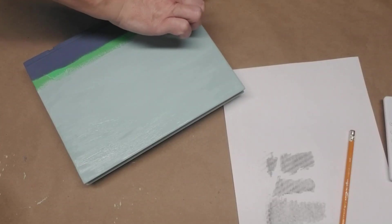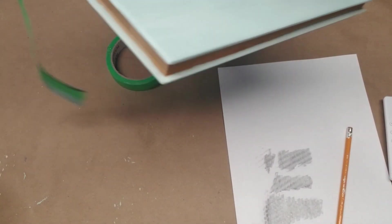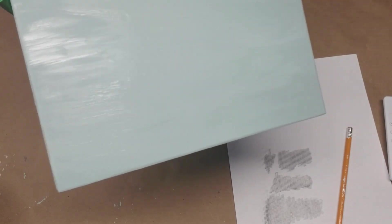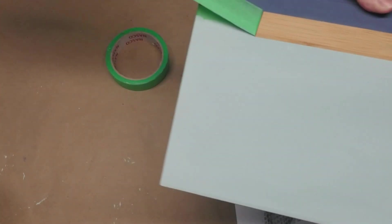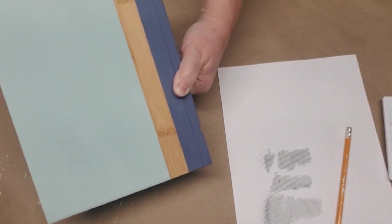Here I am removing the painter's tape and this is going to reveal the color of the book underneath, the brown. I'm going to be able to do some embellishments with that later on, so I really love the way it's starting to come together.